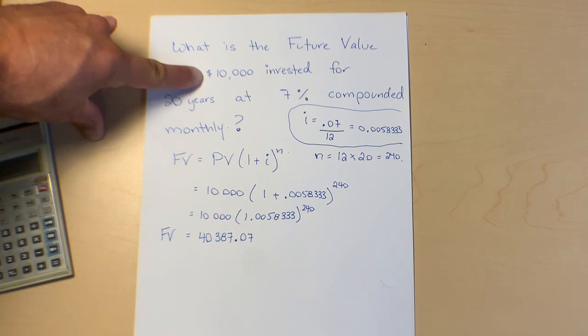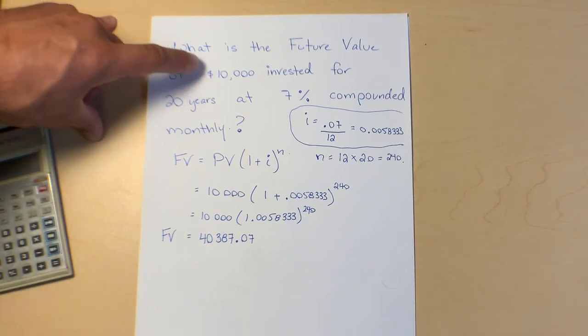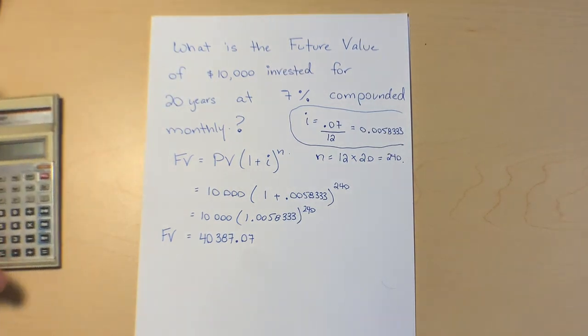And if you invest it for 20 years which might seem like a long time, it's really not. That time will pass. And if you can invest it at seven percent which is attainable.